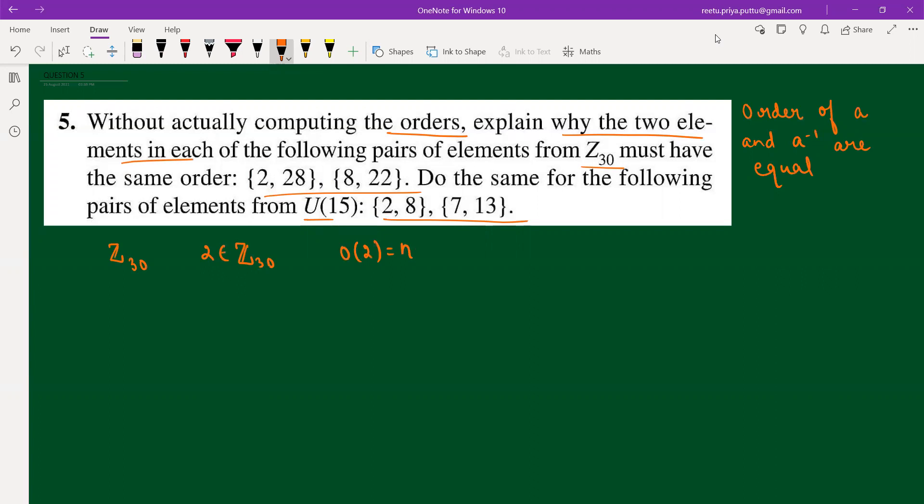Whatsoever be the order, I am not saying what is the order. I just have to show that both have same order. If you try to find the inverse of 2, I have already said that the inverse of an element in Zn is basically n minus that element, which equals 28.